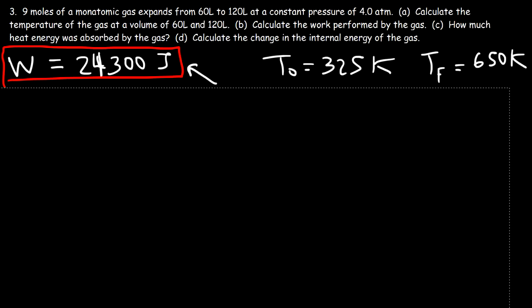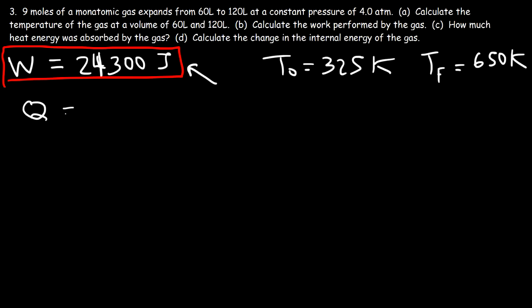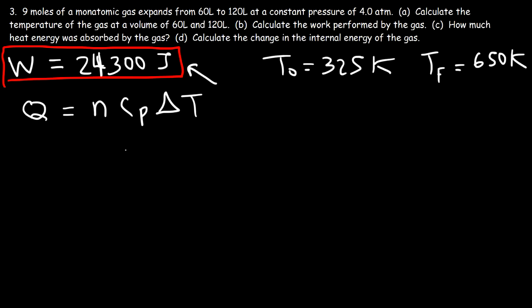Part C: How much heat energy was absorbed by the gas? The formula is Q = n × Cp × ΔT, where Cp is the molar heat capacity at constant pressure, since we're dealing with an isobaric process.